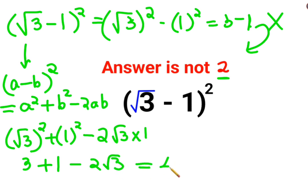So the answer comes out to be 4 minus 2 root 3, which can also be written as 2 common, so 2 minus root of 3.